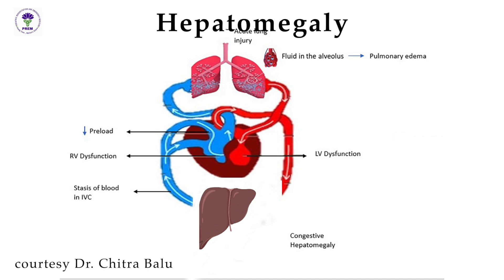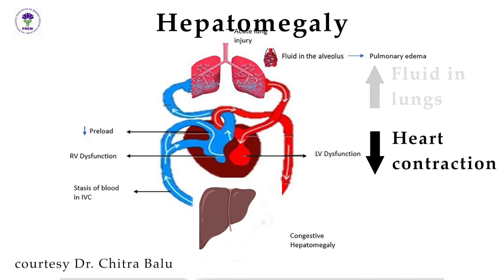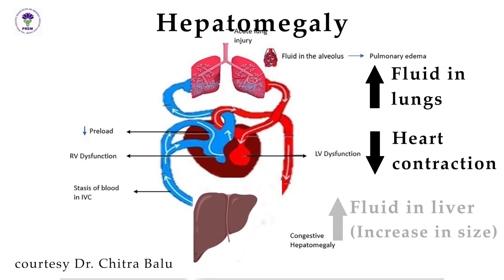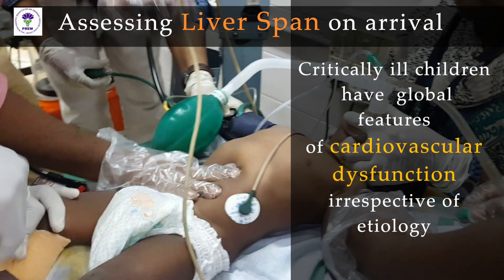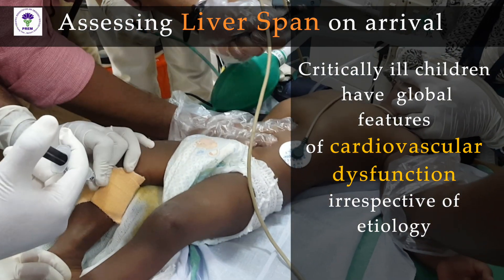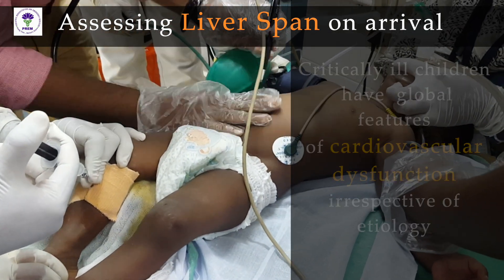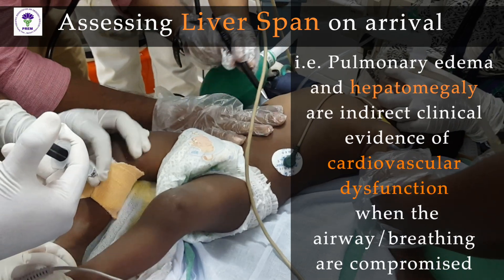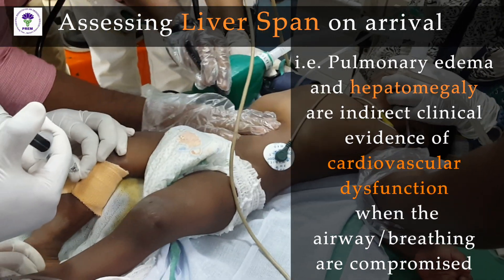Decreased heart contractility causes fluid accumulation in the lungs secondary to pulmonary edema. The second organ that gets congested or filled with fluid is the liver.